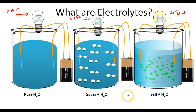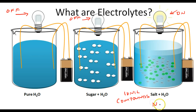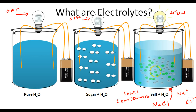So what kinds of solutions produce ions when put in water? In the last video, we talked about ionic compounds like NaCl — sodium chloride, or table salt. When we put table salt in water, this sodium chloride is going to dissociate — it's going to break apart into two free-floating ions: sodium ions and chloride ions floating around in this water, and that's what allows this solution to be an electrolyte and conduct an electric current to turn on this light.